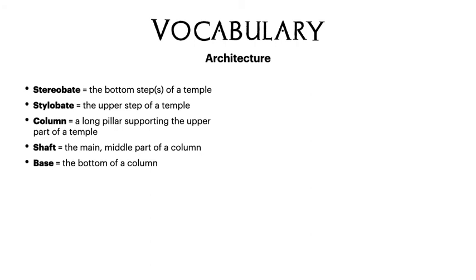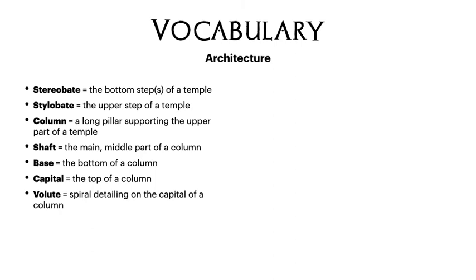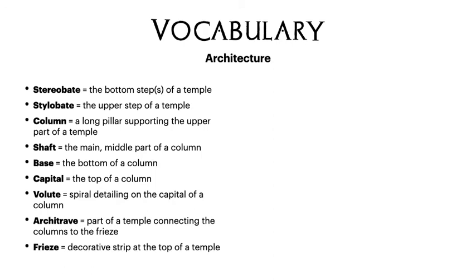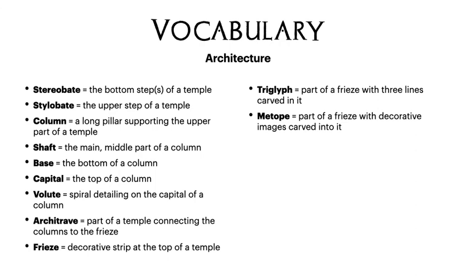The capital is the top of the column, and Ionic ones have that volute spiral detailing on their capital. Then on top of the columns we have the architrave — that piece that goes all the way over the top, connecting the columns to the frieze, which is the decorative strip that goes all the way around. If it is a Doric temple, it alternates between triglyphs — those three lines — and metopes, those decorative images. If it is an Ionic temple, it just has a continuous frieze. The architrave and the frieze together are referred to as the entablature of the temple.